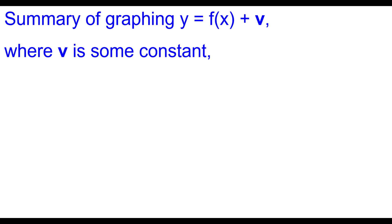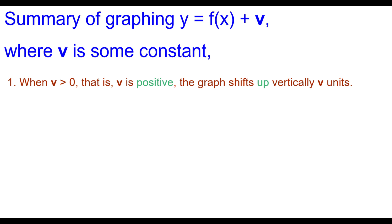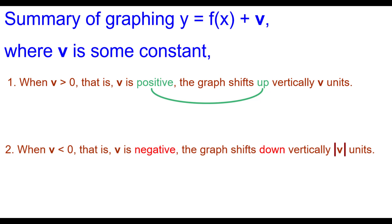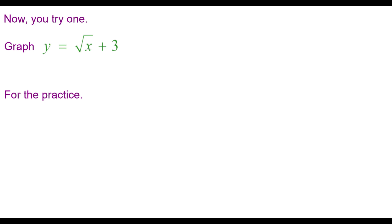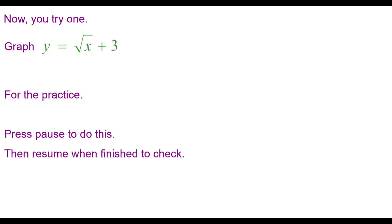To summarize: when graphing y equals f of x plus v, where v is some constant outside the function — when v is greater than zero (positive), the graph shifts up vertically v units. When v is negative (less than zero), the graph shifts down vertically the absolute value of that number, that many units. Now you try one: graph y equals the square root of x plus 3 for practice. Press pause to do this and then resume when finished to check your answer.